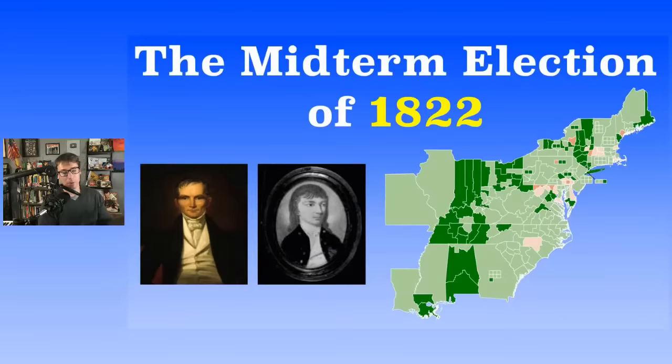The Democratic-Republicans had controlled both houses for most of the past 20 years. They now have such a big majority that Federalists are just thinking: what's the point of even running anybody? The Federalist Party is going to die soon after this — this is pretty much the end of the Federalist Party.